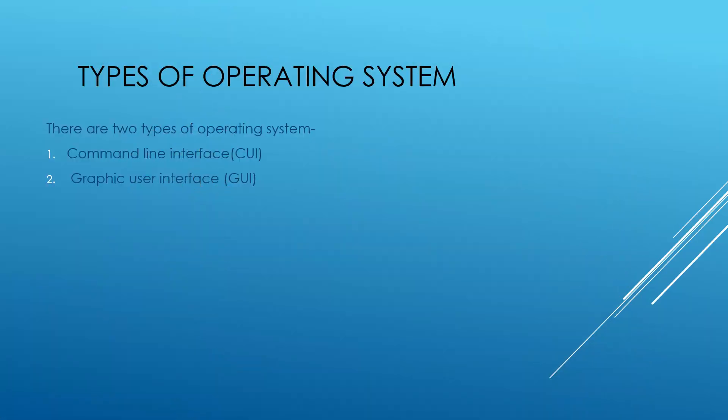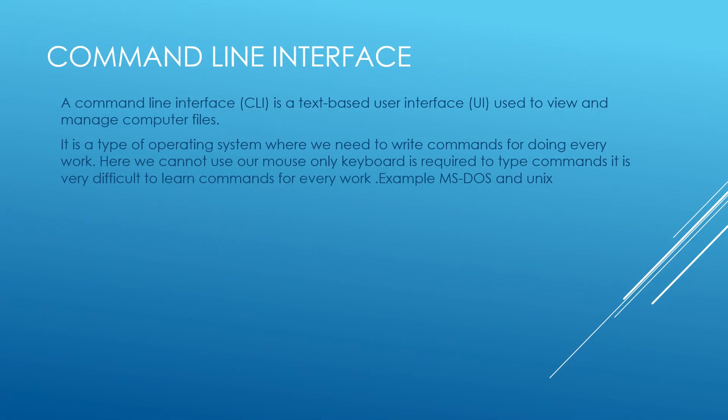Now let's look at the types of operating systems. Basically there are two types: command line interface and graphical user interface. First is the command line interface. A command line interface is a text-based user interface, which means here we have to write commands for everything. We need to write commands using the keyboard. There is no mouse — just a black screen where we type our commands to do various work.